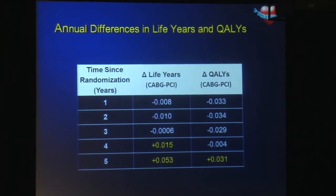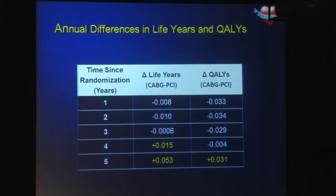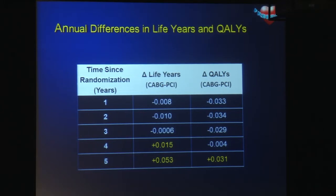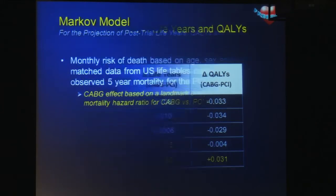Turning to the life years gained and the quality-adjusted life years gained during the trial period: because of the increased mortality rate for CABG early on in the recovery period, life years gained did not become apparent until year four of the follow-up period, and at the end of five years, there were roughly 0.053 life years gained with CABG. Considering quality-adjusted life years gained, because the recovery period after CABG is associated with lower quality of life, the quality-adjusted life years gained with CABG did not emerge until year five.